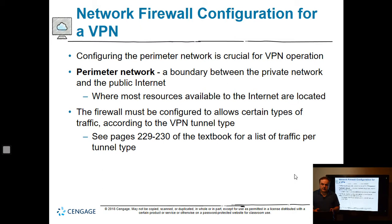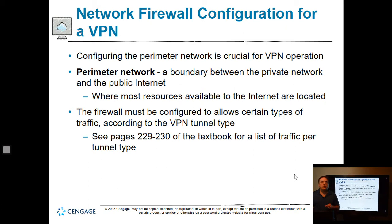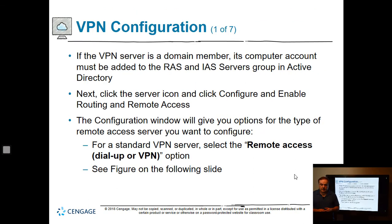You also need to configure the perimeter network — the boundary between the private and public network. Quiz alert: that definition is likely to appear on your quiz. The firewall must be configured to allow certain types of traffic; each VPN type uses a different TCP or UDP port. Additionally, if the VPN server is a domain member, its computer account must be added to the RAS and IAS Servers group in Active Directory, otherwise it won't be properly trusted.